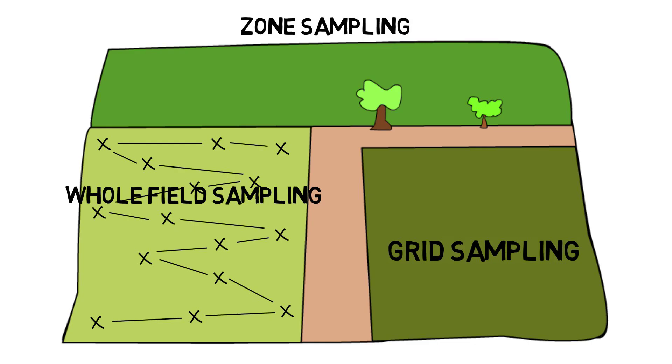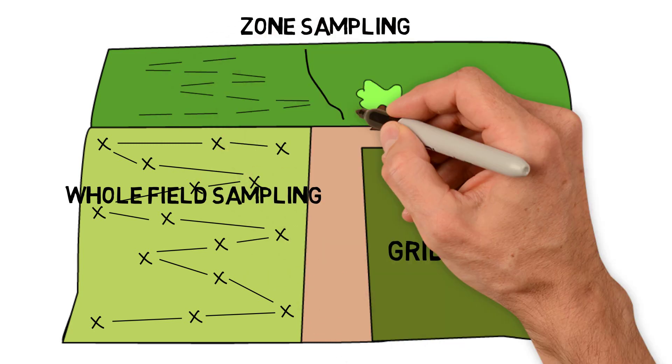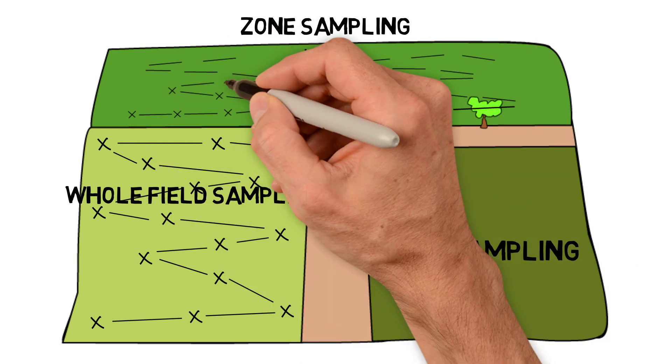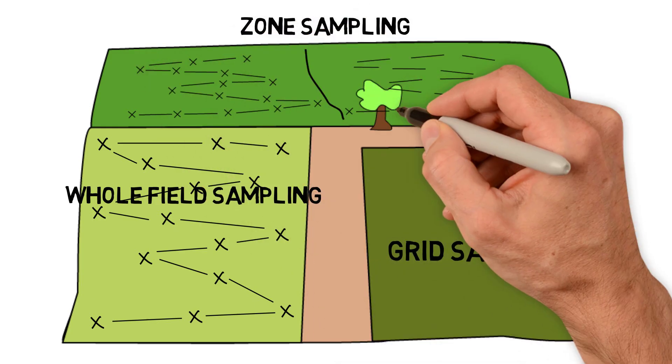The idea with zone sampling is that you'll know that you'll want to treat these areas of the field differently. So to do a zone sampling, you'll first identify zones in a field, and this could be as many zones as you want. And then in each field, you'll take 12 to 15 cores at random, following a W-shaped pattern, and composite them together for each zone, and send those zone samples separately to a lab.